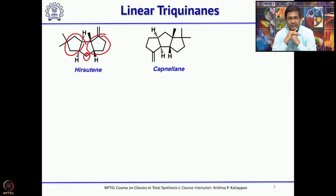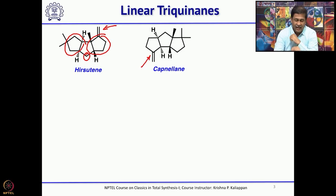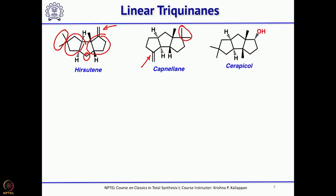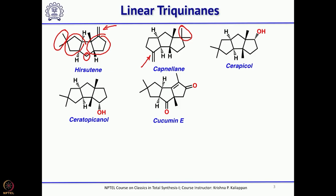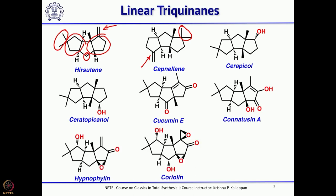If you look at the difference between hirsutene and capnellene: hirsutene has an exocyclic double bond here, whereas capnellene has it elsewhere. Hirsutene has a dimethyl group at one position, whereas the other has the dimethyl group at a different position. These subtle changes lead to different natural products based on how they cyclize during biosynthesis. Quite a few are highly oxygenated — such as ikarugamycol and coriolin — with 3 to 4 oxygen atoms.